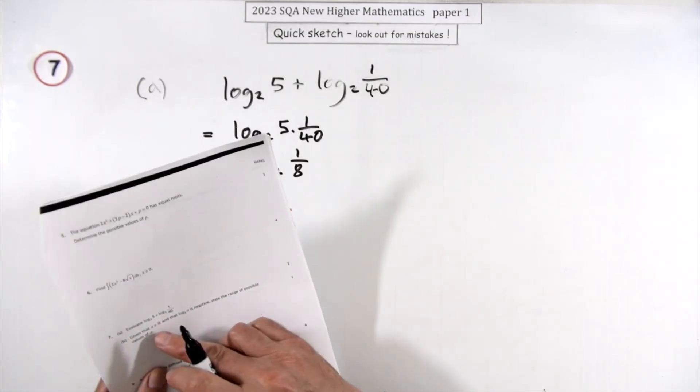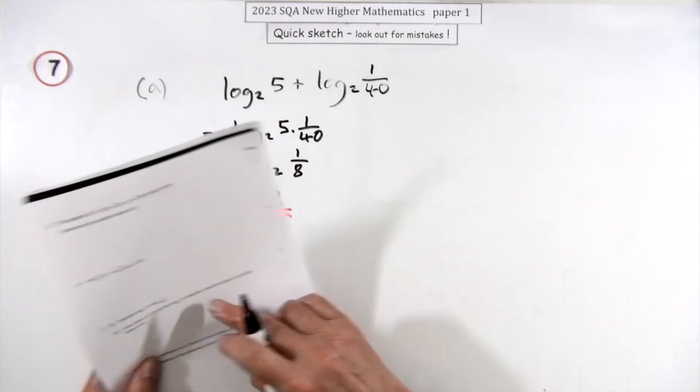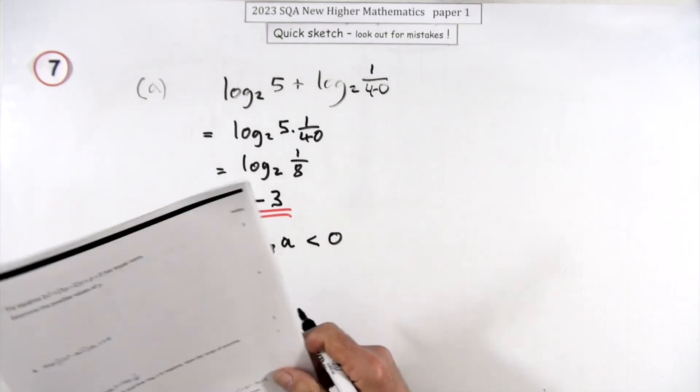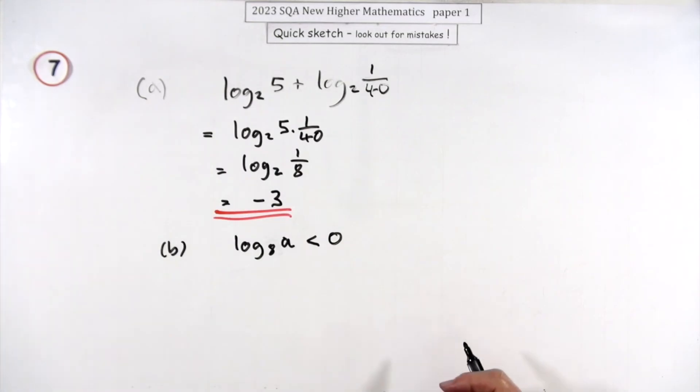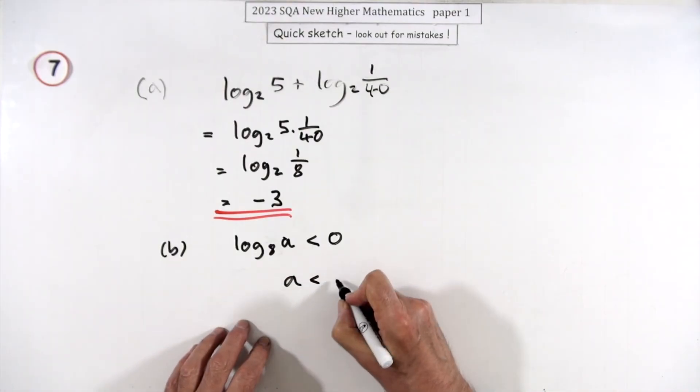In part b, it says given a is a real number and the log of a is negative, that means it's less than zero. State the possible values of a.